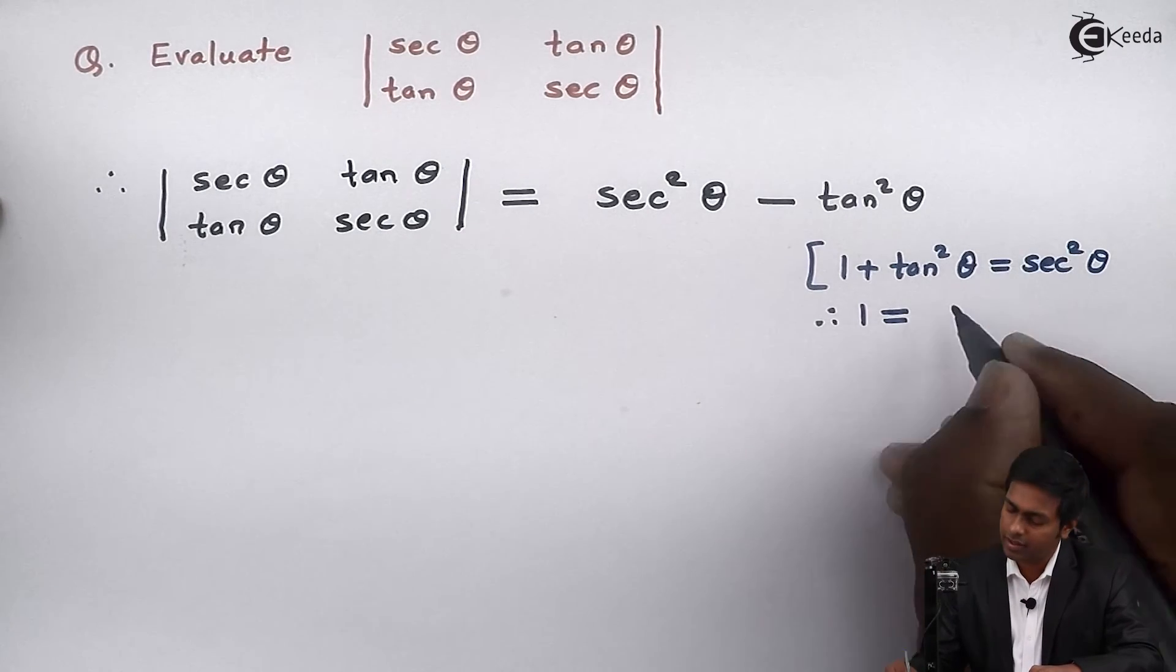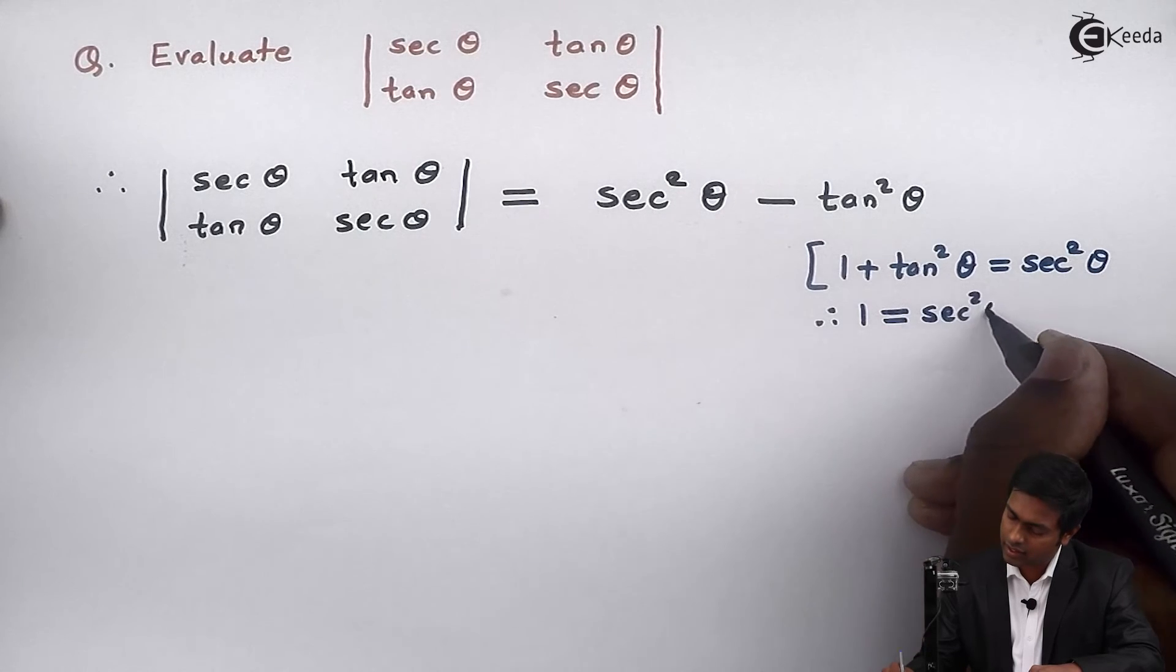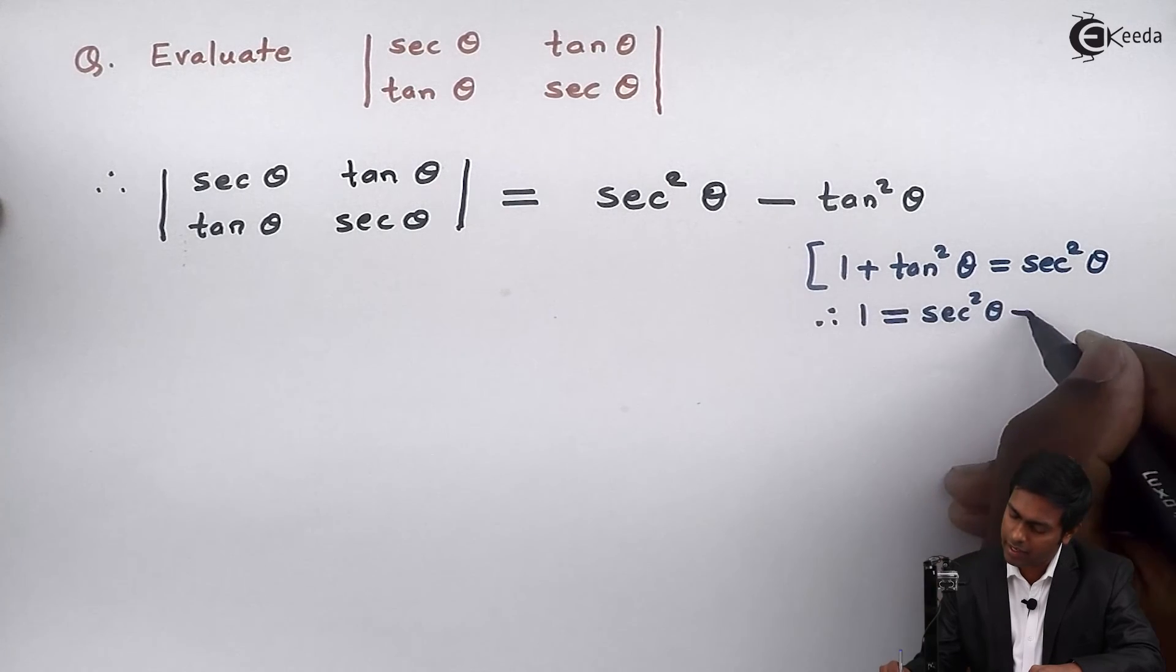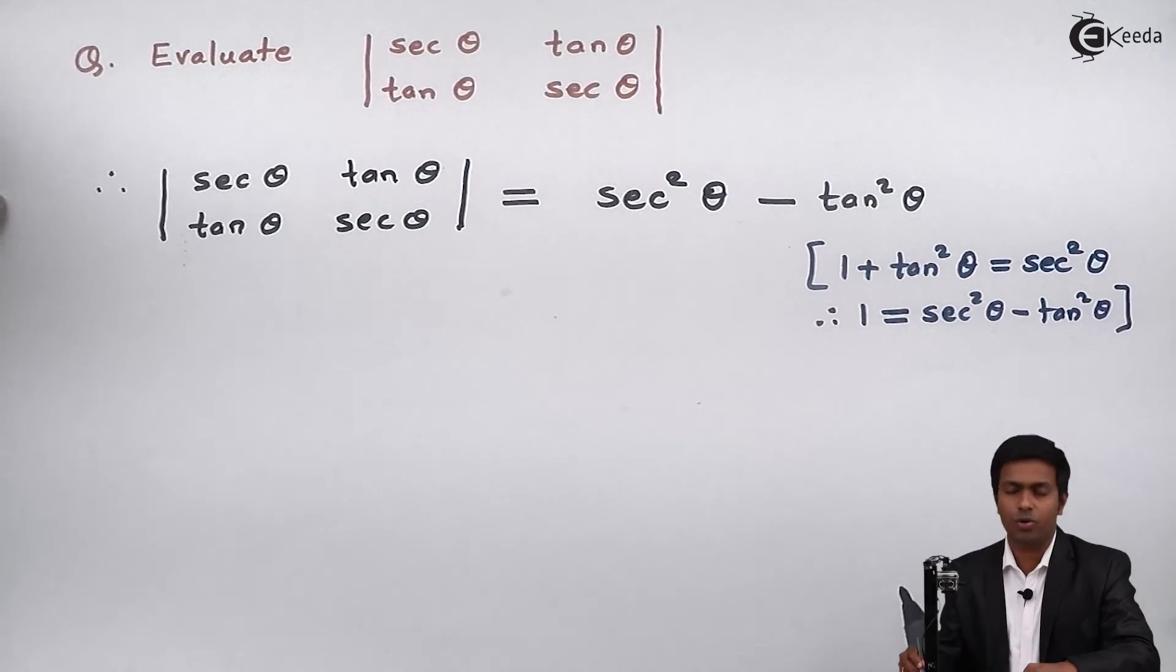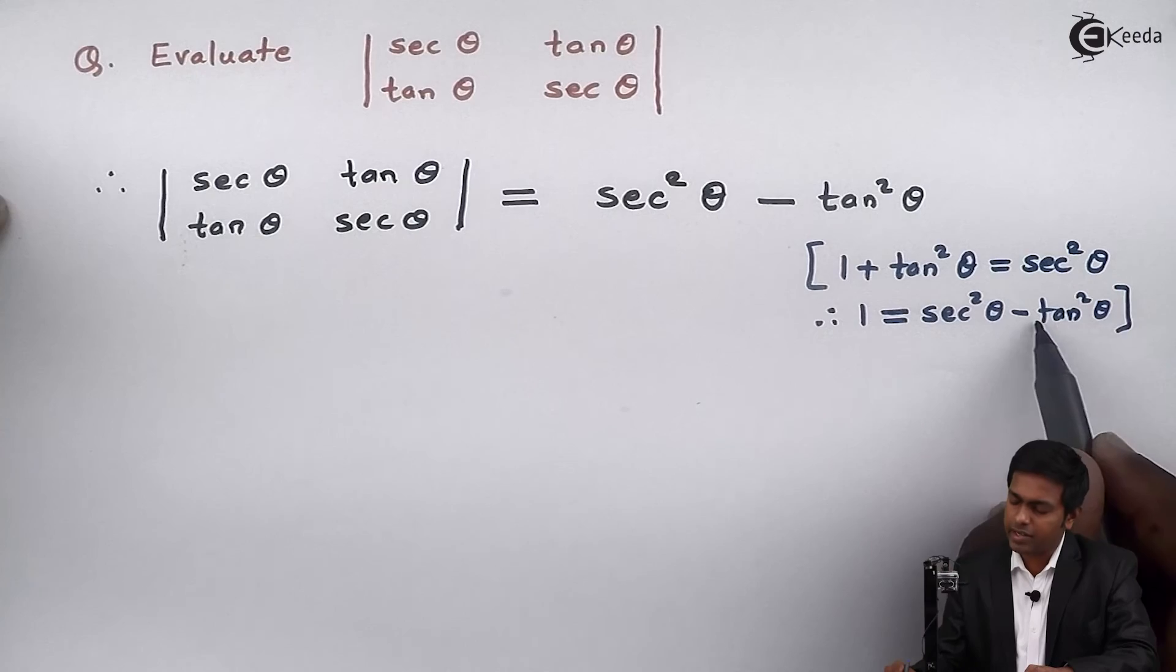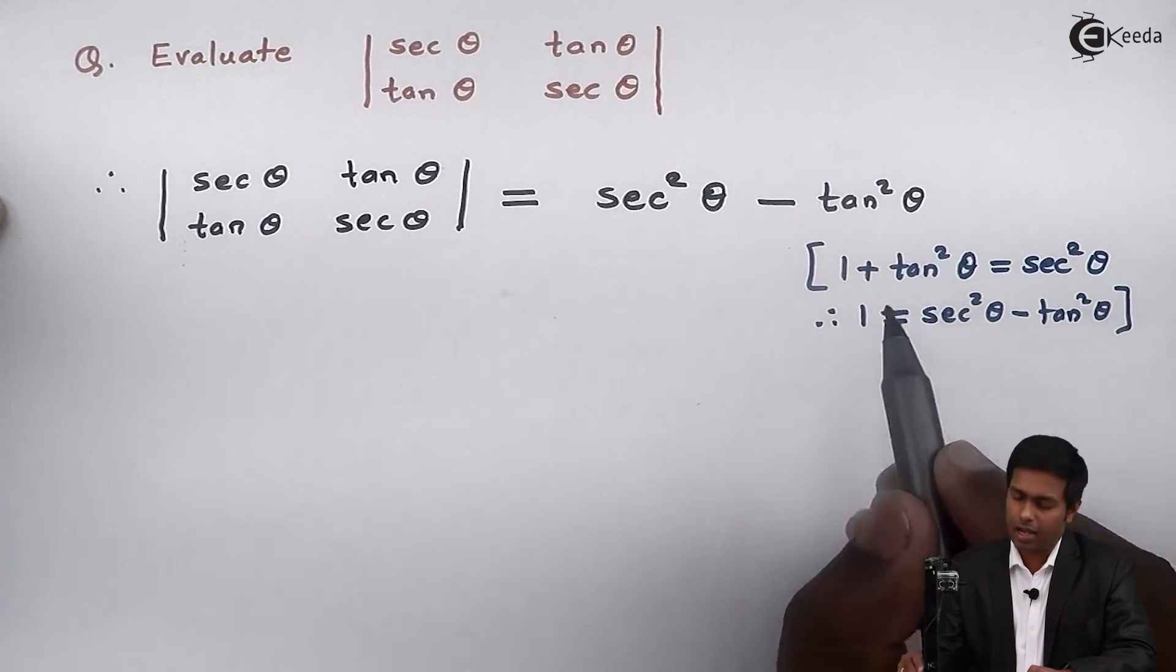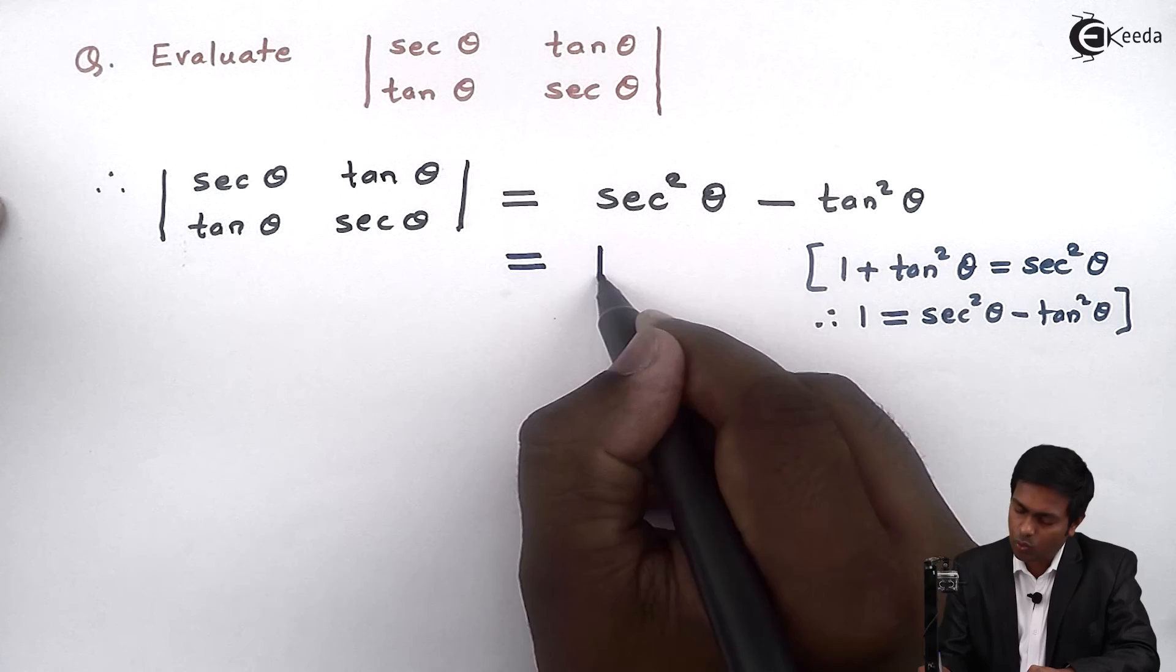the right hand side we will get sec square theta, this plus will become minus tan square theta. So it means the value of sec square theta minus tan square theta is 1 and hence here the answer is 1.